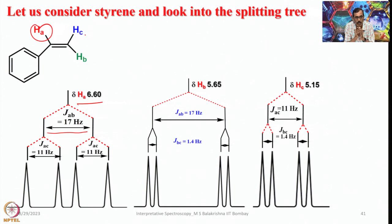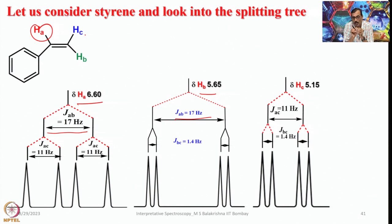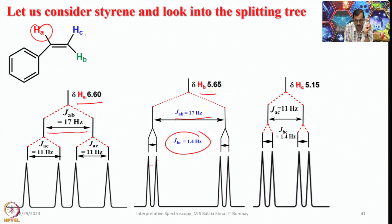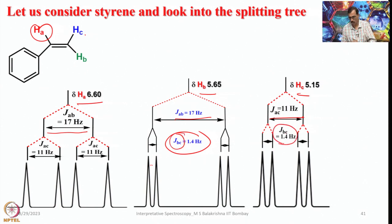For Hb: it is first split by Ha via trans coupling (larger magnitude), then further split by Hc via geminal coupling. Since Hb and Hc are on the same carbon but not equivalent, they exhibit geminal coupling of about 1.4 Hz — a very narrow spacing visible in the spectrum. For Hc: it is first split by Ha via cis coupling (11 Hz) into a doublet, then further split by the geminal coupling with Hb (1.4 Hz), also giving a doublet of doublets.